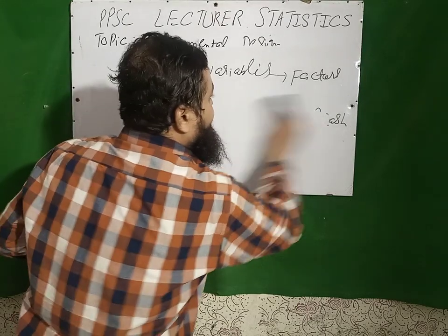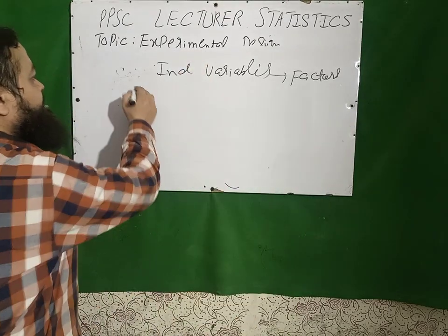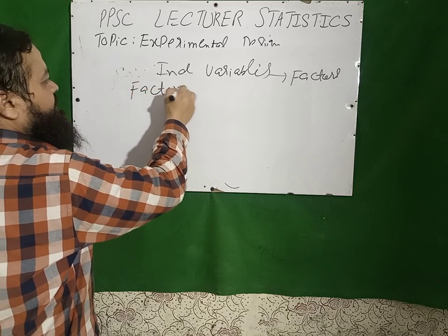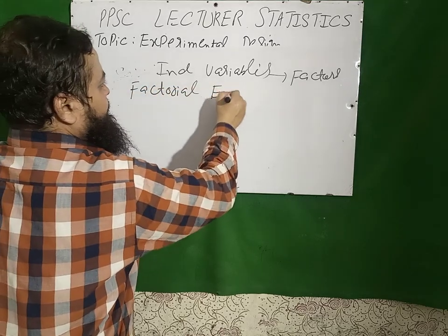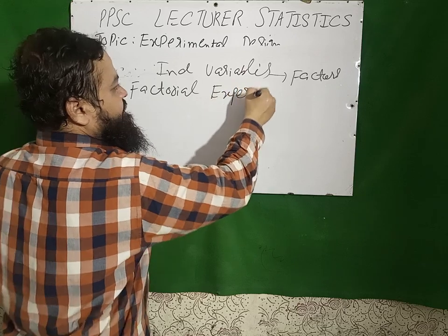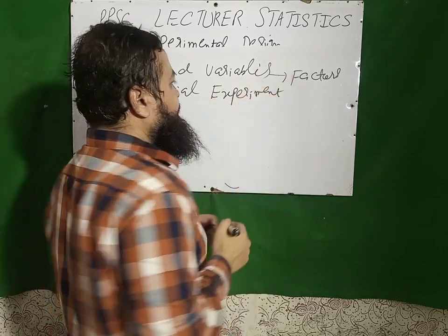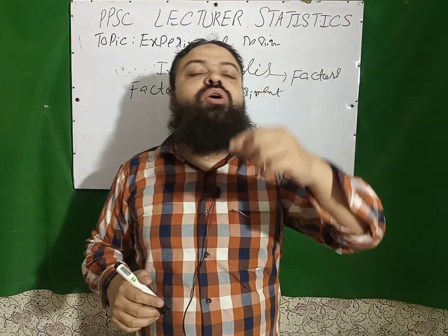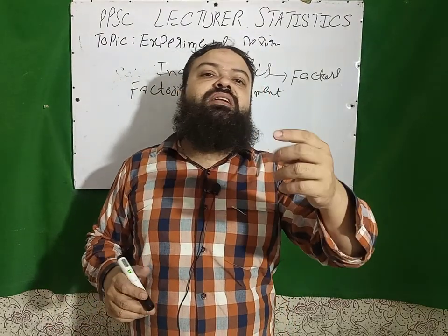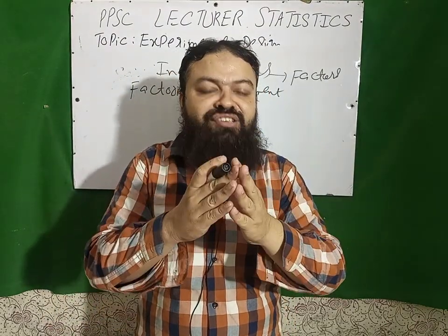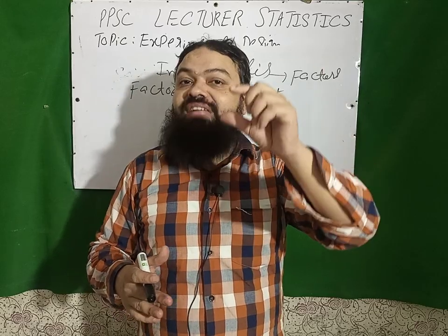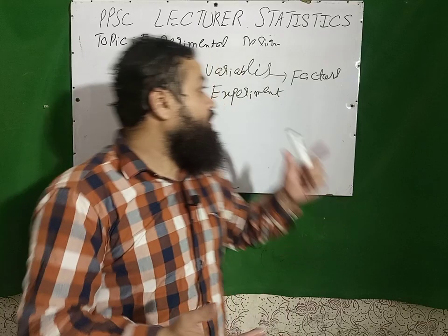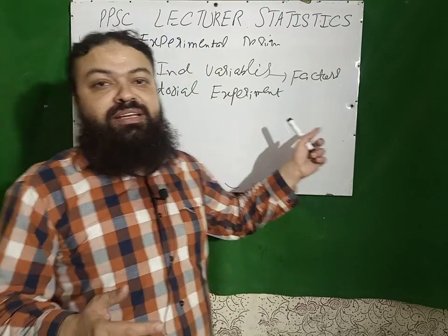If I want to check the effect of DAP in the month of October, that will be the first level. If I want to check the effect of the same treatment in the month of November, that is the second level. These are the levels. Then I will tell you the factorial experiment. A treatment that consists of all possible treatment combinations of several factors at several levels is called the factorial experiment.